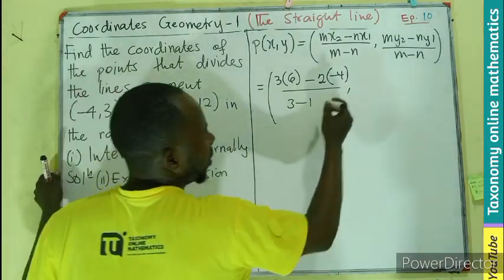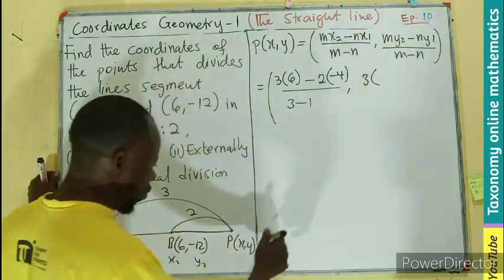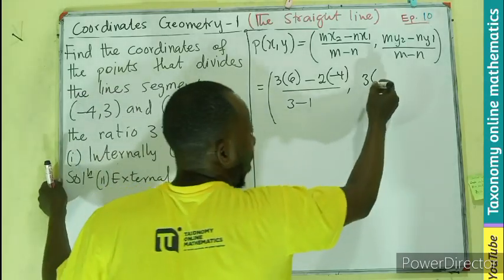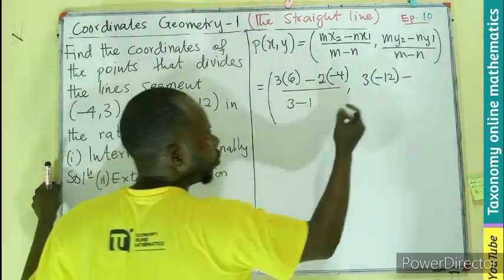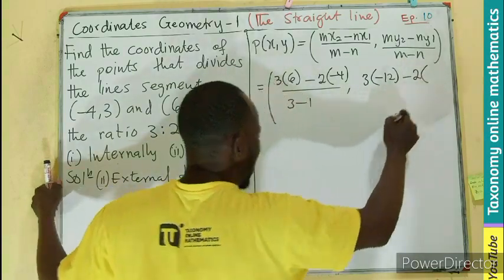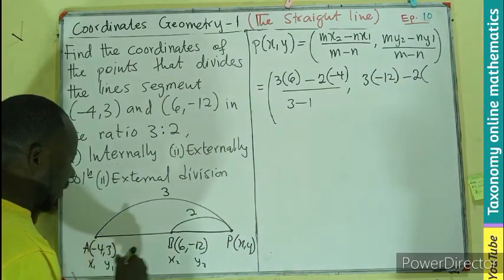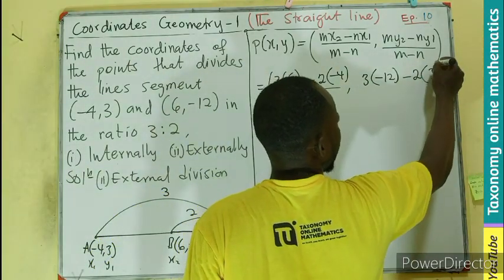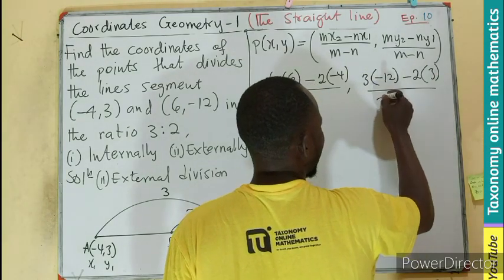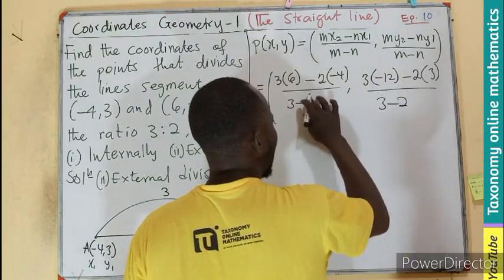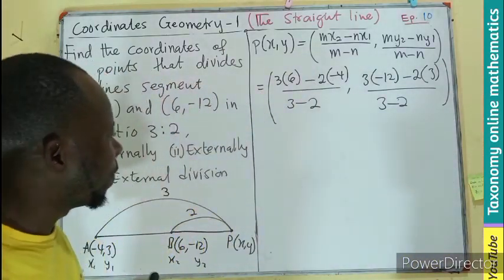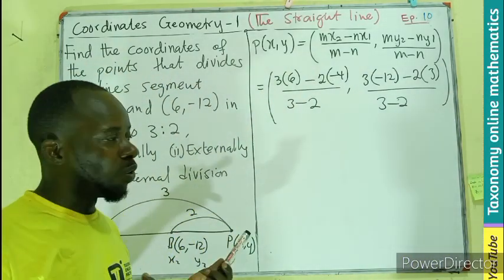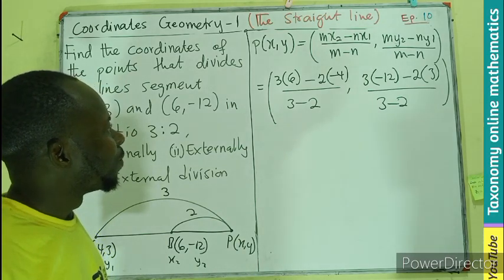We are going for 3 multiplied Y2, and Y2 is -12, minus 2 multiplying Y1, which will be 3. That will still be divided by what? 3 minus 2. I guess it's minus 2. I was too fast to write the answer. 3 minus 2 is 1. So I write the 1 there.